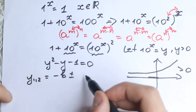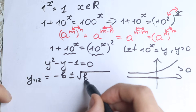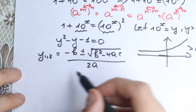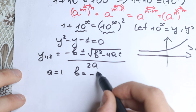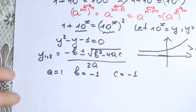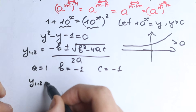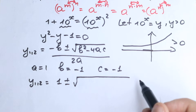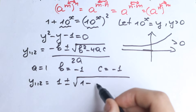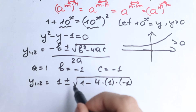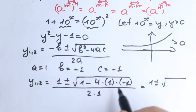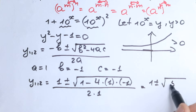Our coefficients are: a equals 1, b equals minus 1, and c equals minus 1. Plugging in: y equals minus b — which is 1 — plus or minus square root of b squared minus 4ac, all over 2 times 1. Simplifying: 1 plus or minus square root of 1 plus 4 equals 1 plus or minus square root of 5, over 2.